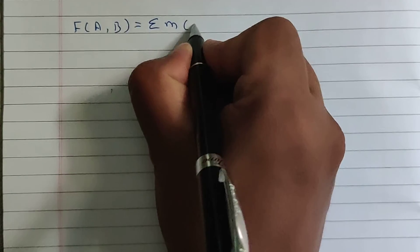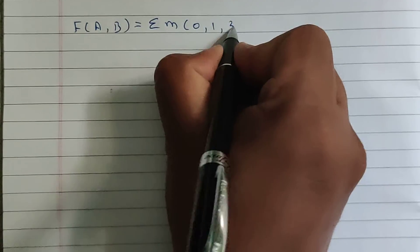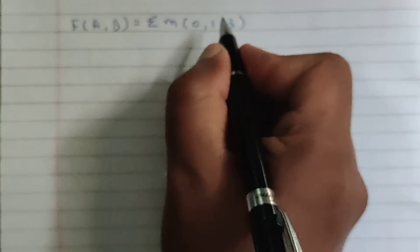Hello friends, today we are going to solve another two variable problem. Let's say that function of A comma B is equal to summation of min terms 0 comma 1 comma 3. So three terms are there.